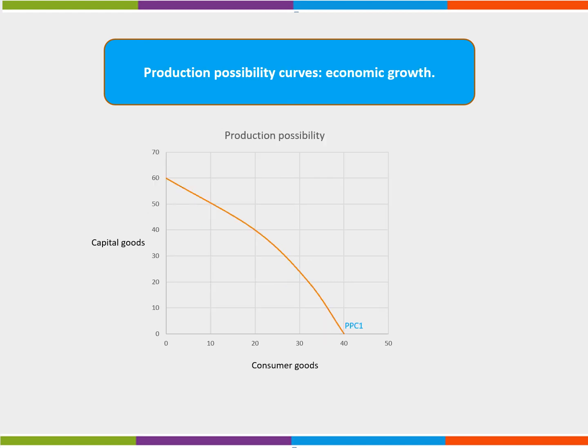Economic growth can be illustrated by an outward shift of the PPC. Here, an economy can produce consumer goods and capital goods. New technology might help to improve the productivity for both types of good. This will be illustrated by a shift outwards and to the right from PPC1 to PPC2. Negative economic growth during a recession can be shown by an inward shift of the PPC. Can you illustrate this diagrammatically?